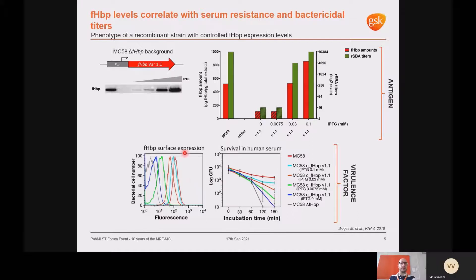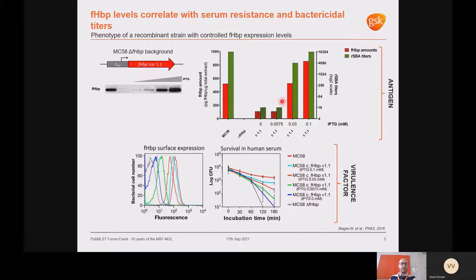As a molecular microbiologist, to demonstrate the importance of FHBP levels I generated recombinant Meningococcal strains where expression levels of FHBP were controlled by the addition of IPTG. As you can see from this western blot, increasing concentrations of IPTG led to increasing amounts of protein, also quantified by mass spectrometry shown in red. With the SBA we observed that bacteria expressing low FHBP levels were not killed by anti-FHBP antiserum, while high-expressing bacteria were killed. FACS analysis confirmed increased surface exposure, and incubation in human serum confirmed that bacterial survival correlated with FHBP levels.